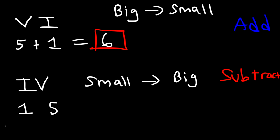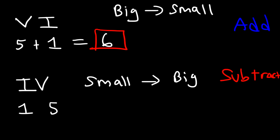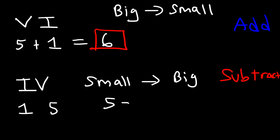You don't want to say 1 minus 5, because that gives a negative number. You subtract the big number by the small number: 5 minus 1 is 4. So IV is equal to 4, whereas VI is equal to 6.